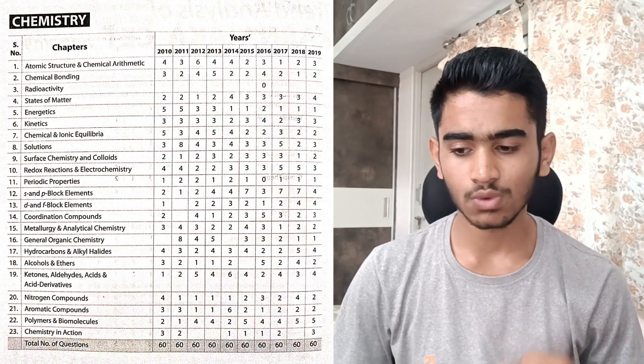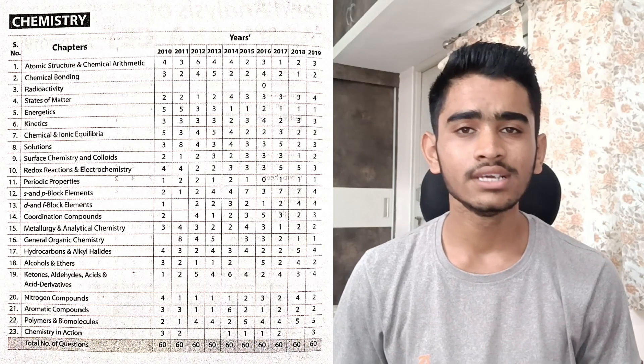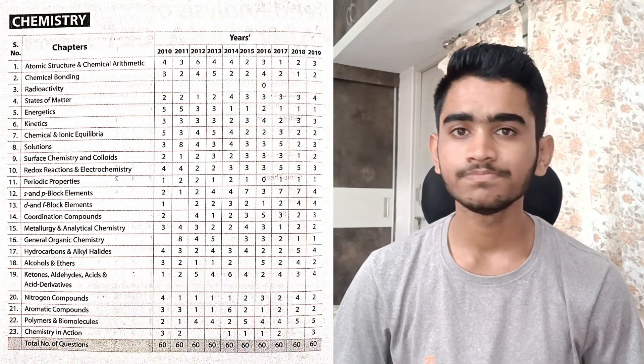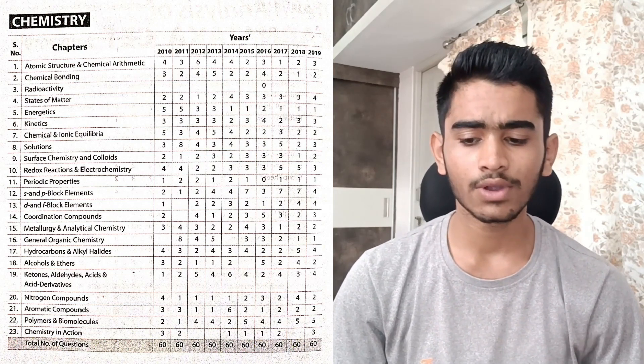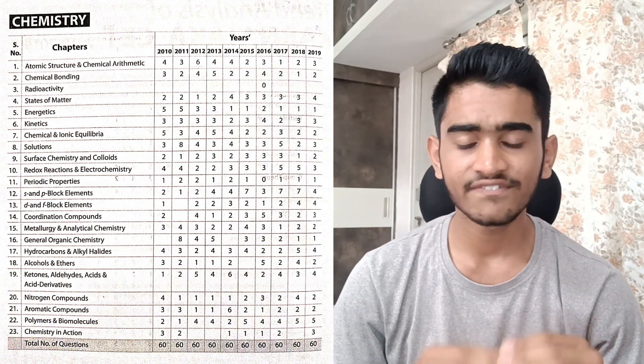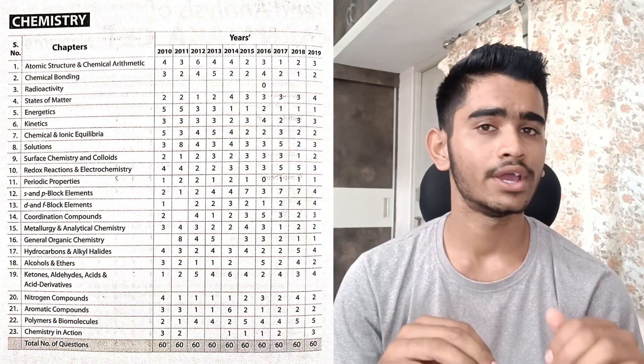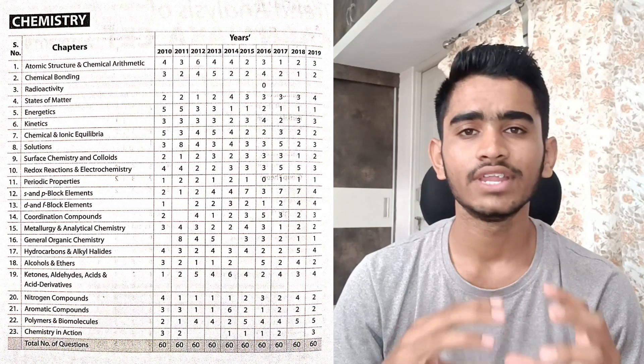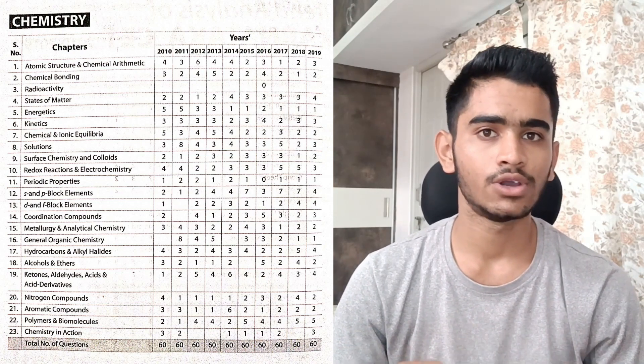When you see the high weightage chapters, one chapter catching my attention is polymers and biomolecules. These are very small chapters and highly theoretical which can be completed in around half an hour or one hour for each. These become really important because in 2018 and 2019, five questions have been asked from polymers and biomolecules. These chapters are very catchy, very easy to grab and you can finish them off in around one hour so you can secure those five marks.